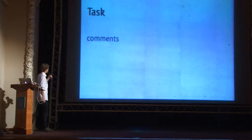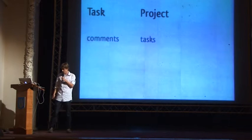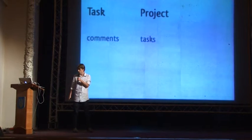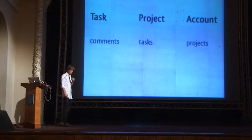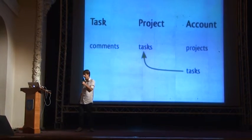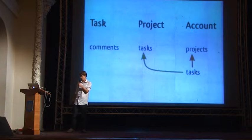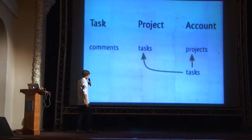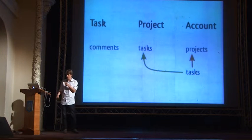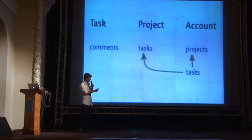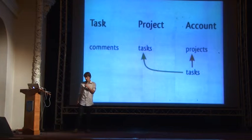Here we have a task model, and the task has many comments — just a regular comments association. There's also a project model, and project has many tasks. And there's an account model, and account has many projects. On top of that, here is a regular through association: account has many tasks through projects. The arrow in green is what we call the source association — the source of the through association. The reddish-brown arrow is the through association, going through projects, but the source is tasks. Remember that, because it's important in a minute.